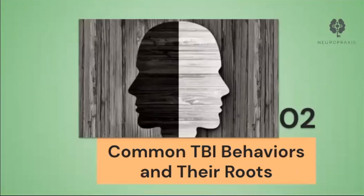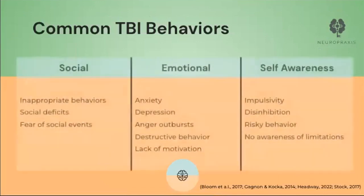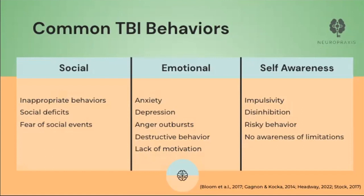In this section, we'll go over common TBI behaviors and their causes. Although not an extensive list, we have listed the most common symptoms seen in the rehab setting. Within social contexts, inappropriate sexual behaviors like exposing oneself or saying vulgar comments are common, in addition to using rude or offensive language and not understanding social cues or norms like taking turns, staying on topic, or interrupting others. Even anxiety around social events can occur due to self-awareness of these deficits and fear of judgment from those who don't understand brain injury.